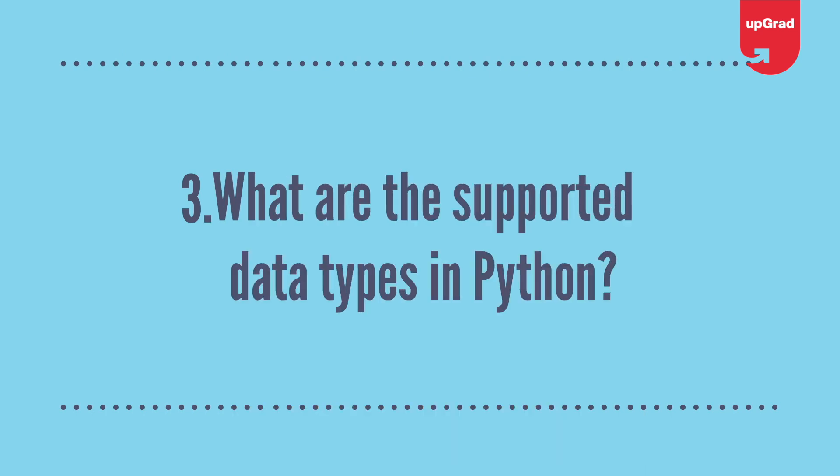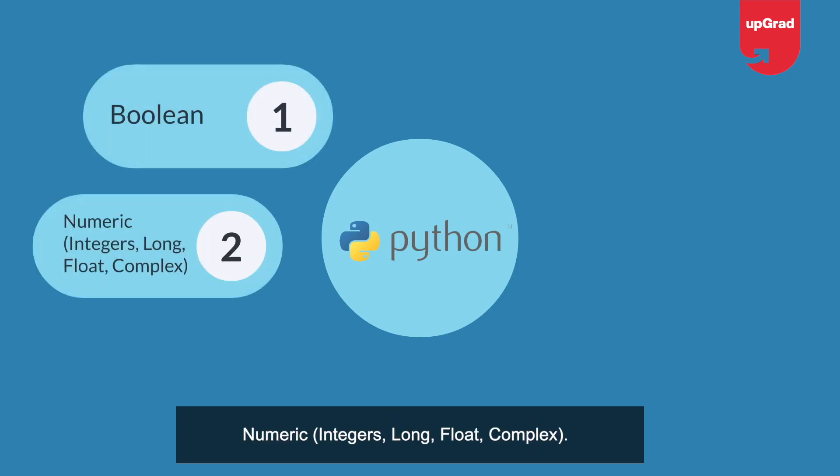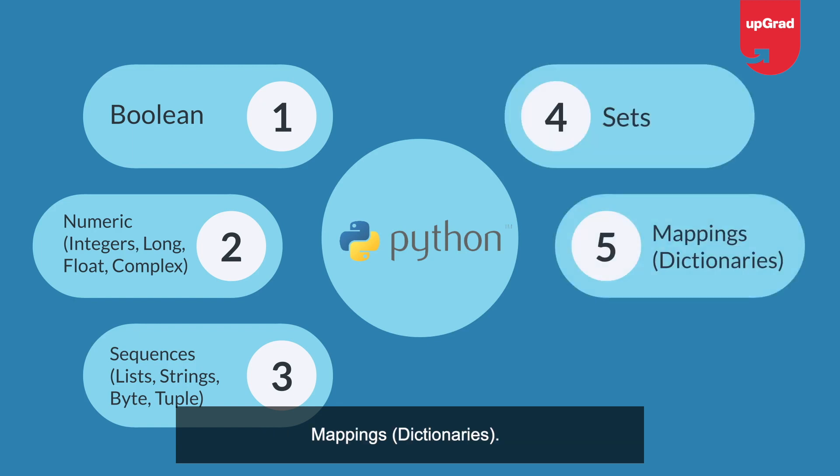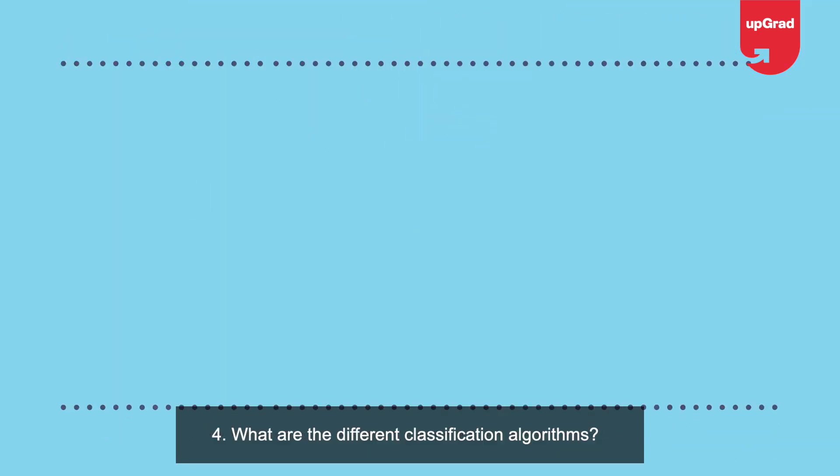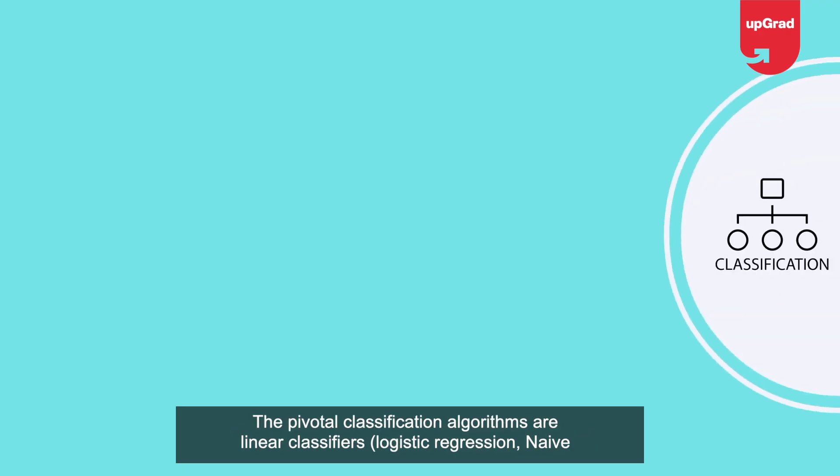Question 3: What are the supported data types in Python? Python has an array of built-in data types including Boolean, numeric (integers, long, float, complex), sequences (lists, strings, tuples), sets, and mappings (dictionaries, file objects).